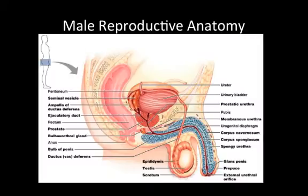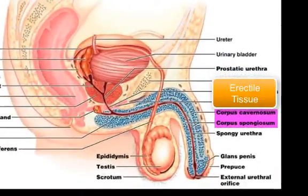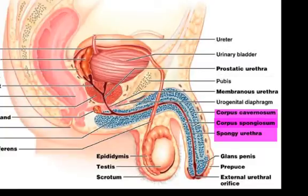Let's start with the male anatomy. The male copulatory organ is the penis. Some things you should be able to point out are the erectile tissue — that's the corpus cavernosum and the corpus spongiosum — and the urethra on the inside, which is attached to the urinary bladder and also delivers semen during ejaculation.